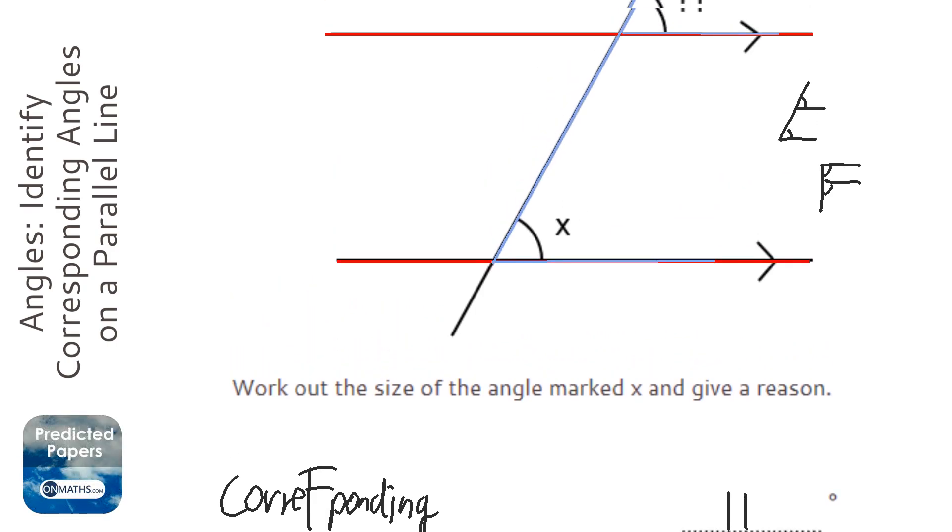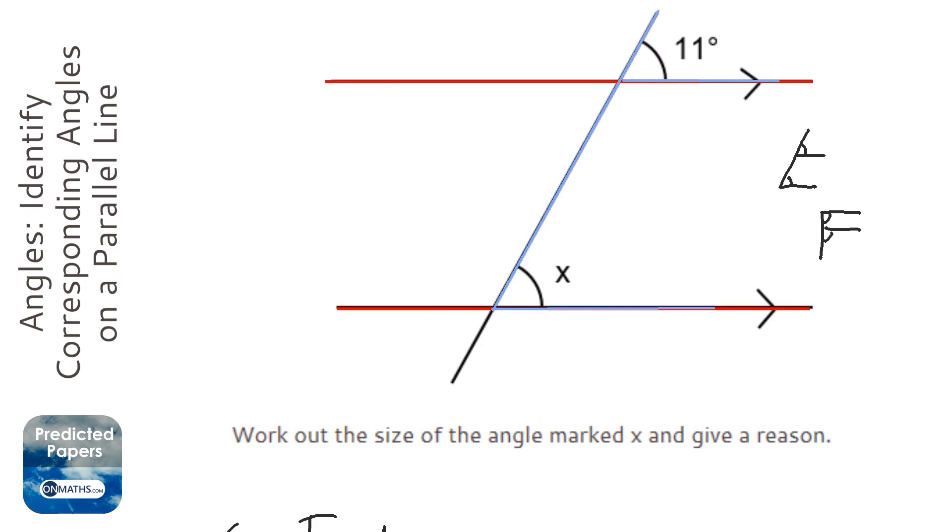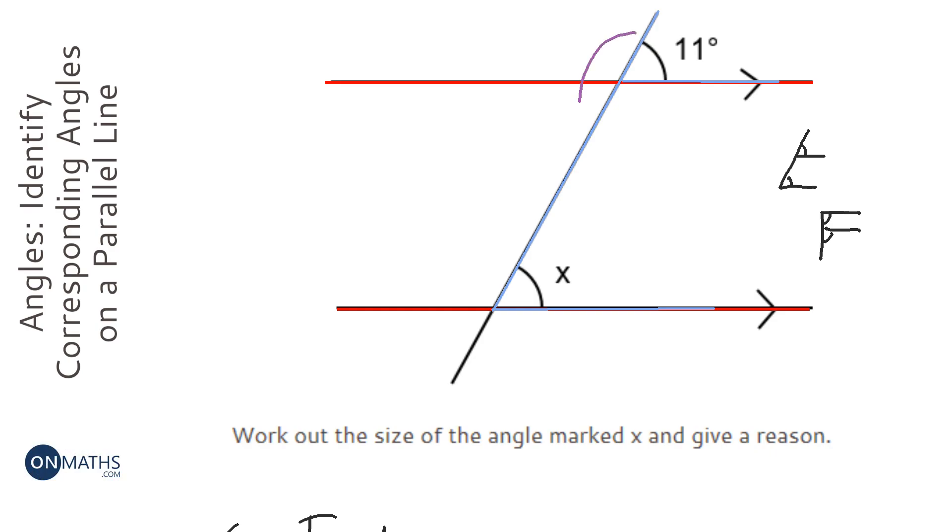So the reason that X is 11 is because they are corresponding. And it basically means in this situation here, if I just highlight it, in this situation here, this is identical situation, so the top right angle will be exactly the same because those two purple circles are exactly the same thing.